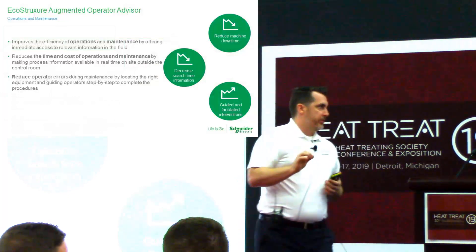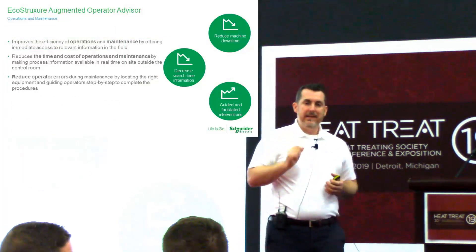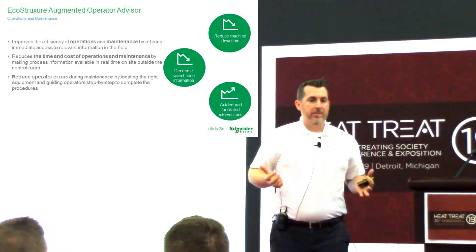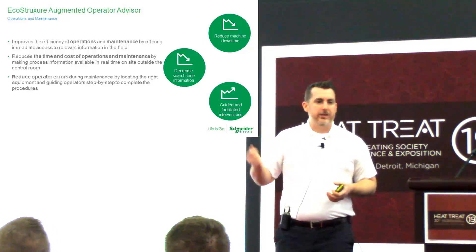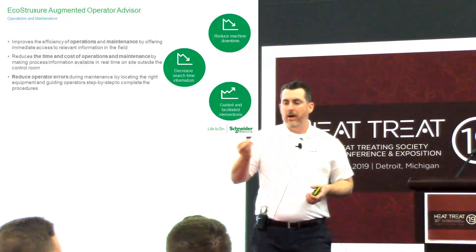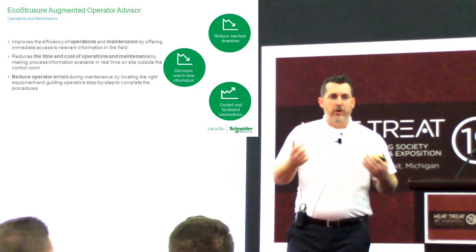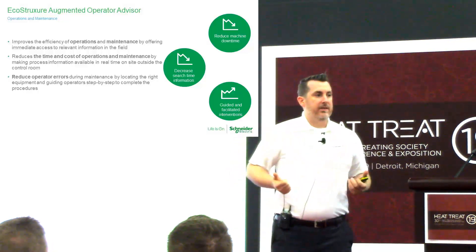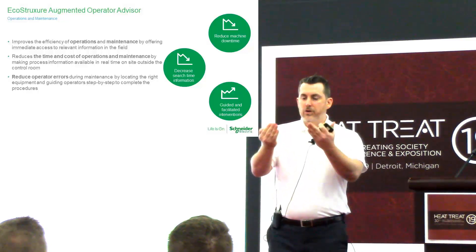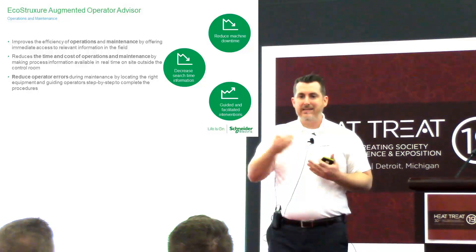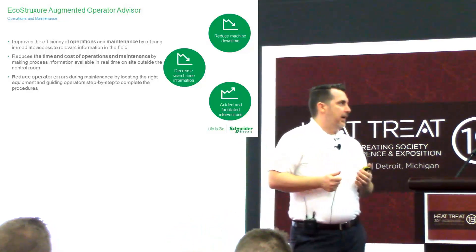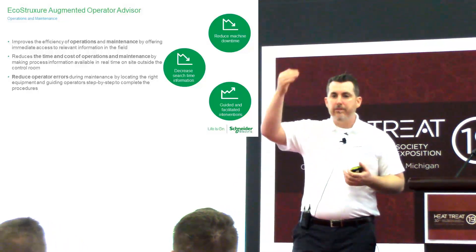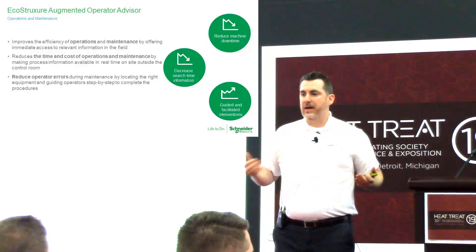The platform is designed to improve efficiency by providing immediate access to relevant data in the field. In a well-designed augmented operator system, we have the ability to upload schematics, data sheets, and maintenance procedures, so that a user standing with their tablet scanning over a piece of equipment — seeing that a particular maintenance activity needs to be performed — is given the relevant information right there as they're performing that task. It reduces the time and cost of operations and maintenance by making live process information available outside of a control room.